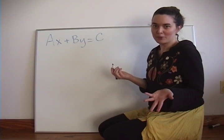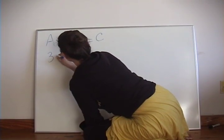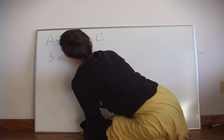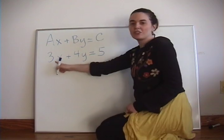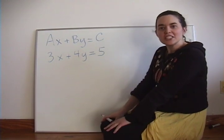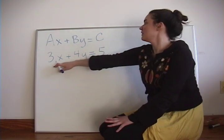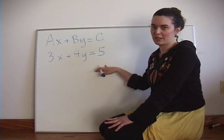So for example, one example might be 3x + 4y = 5. So let's just say we wanted to convert this equation in standard form into slope-intercept form.